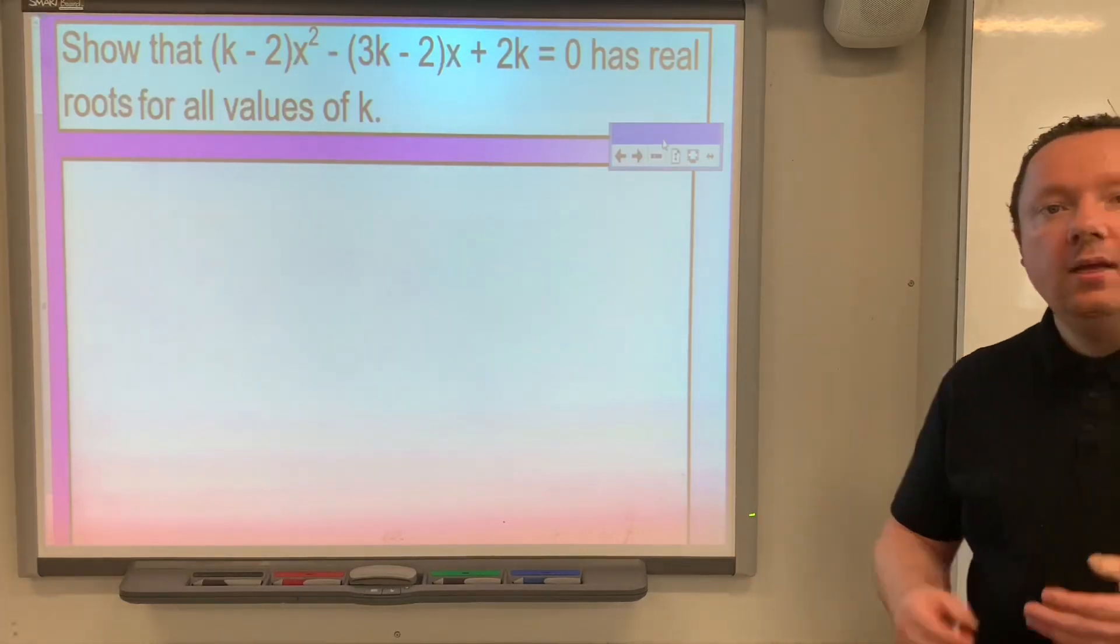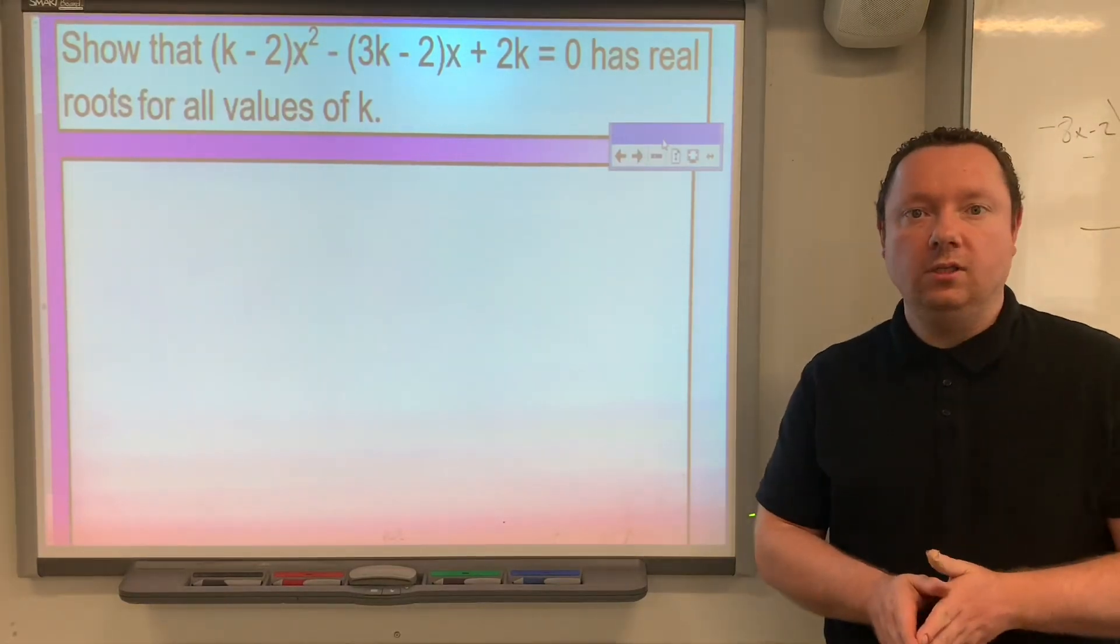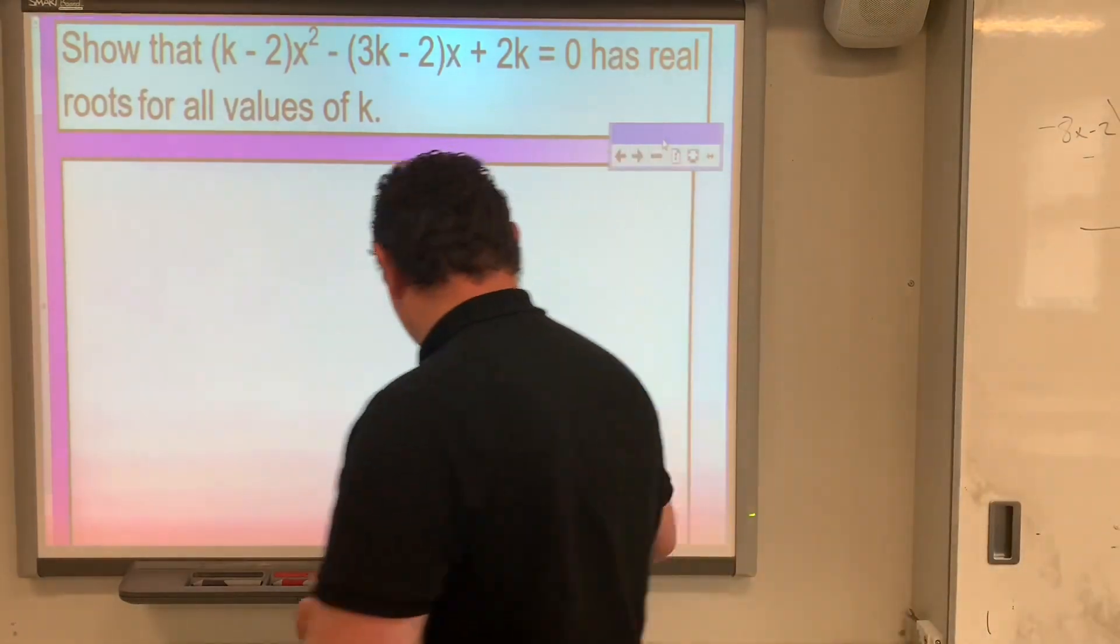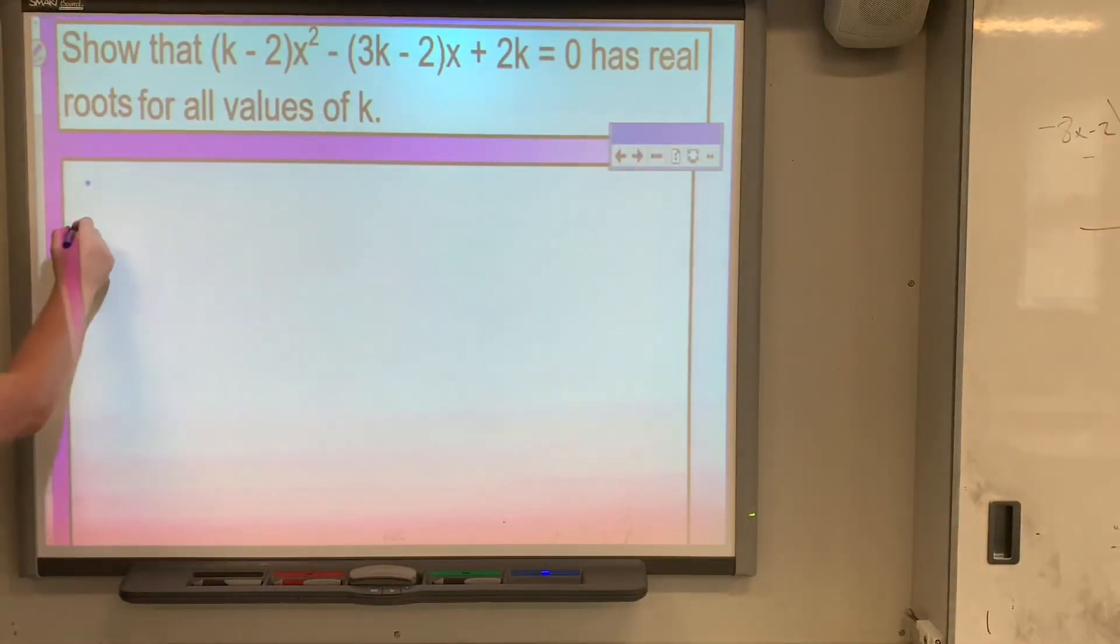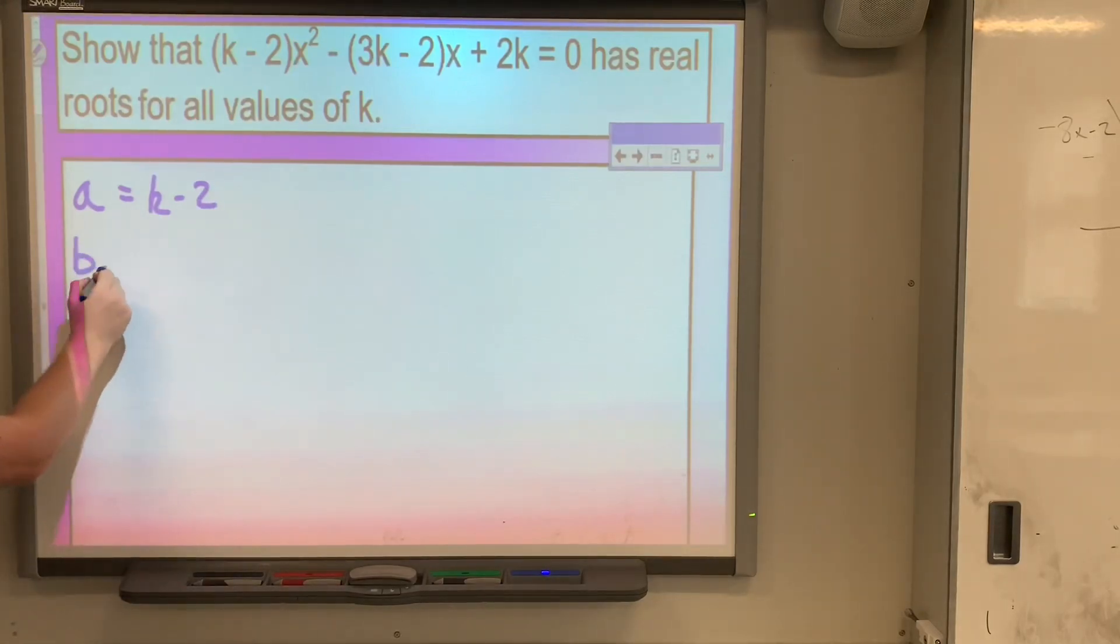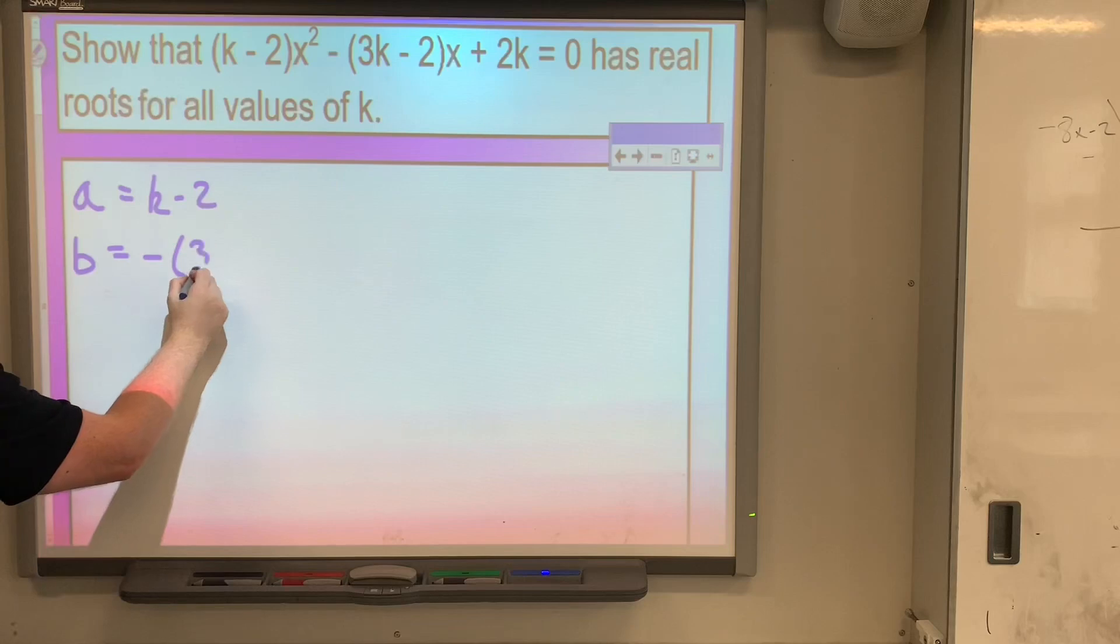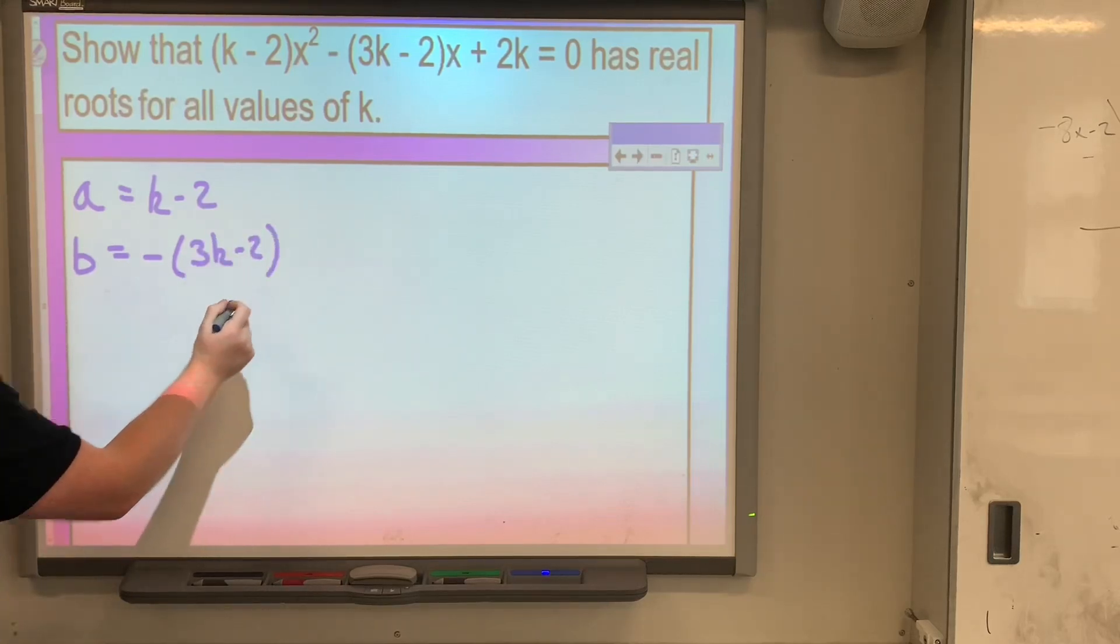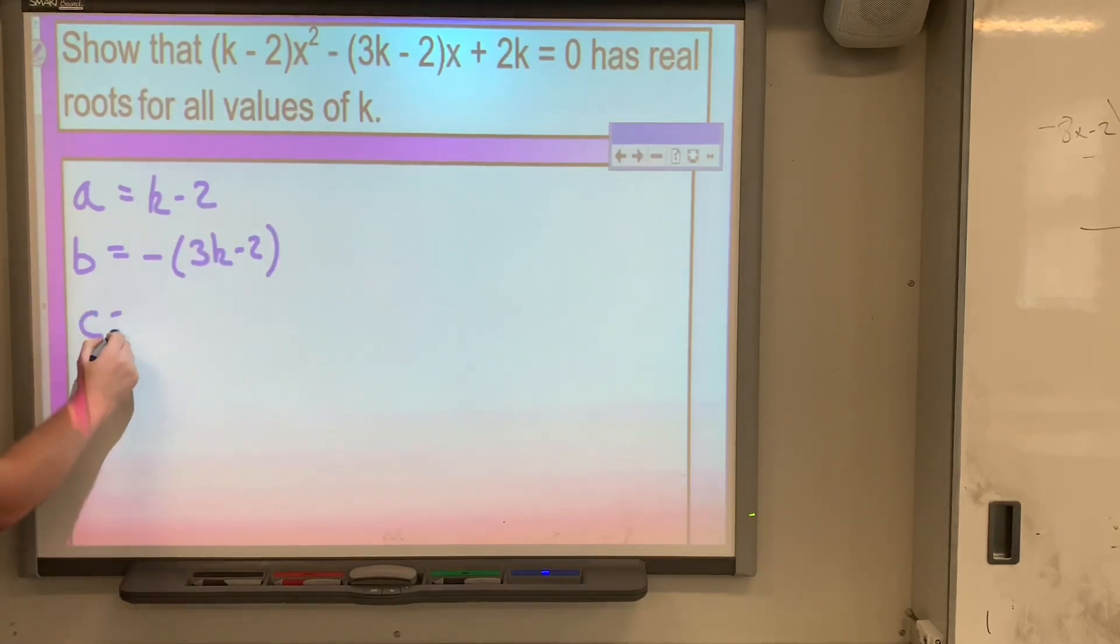So straight away, we're going to work out the discriminant. Be very careful with this one. So a is k minus 2, b is minus 3k plus 2, and c is 2k.